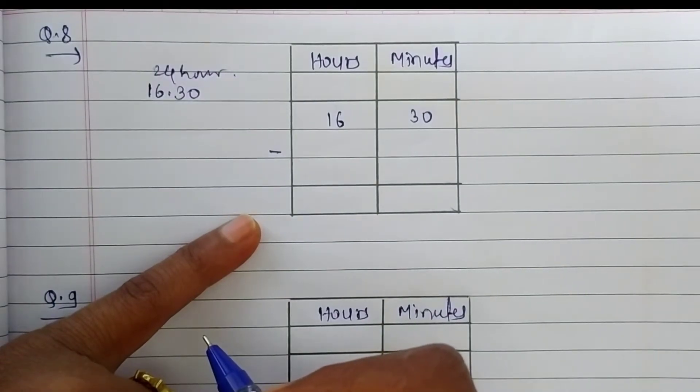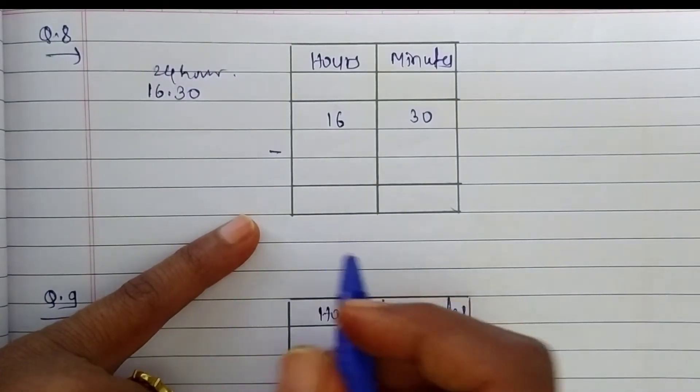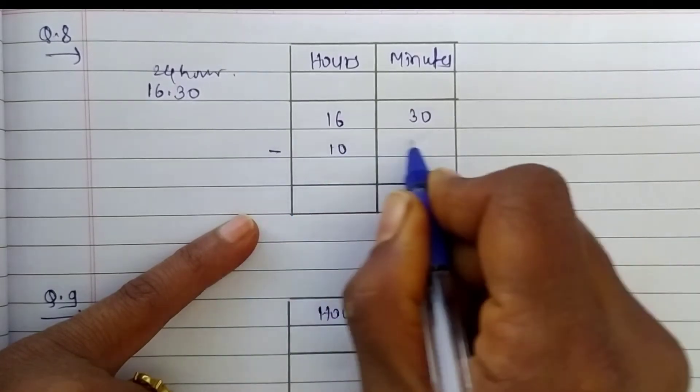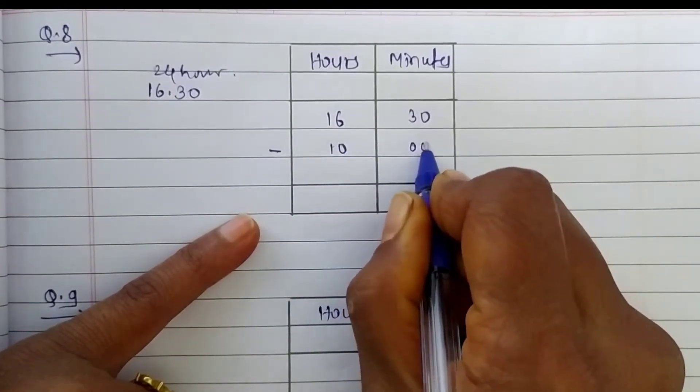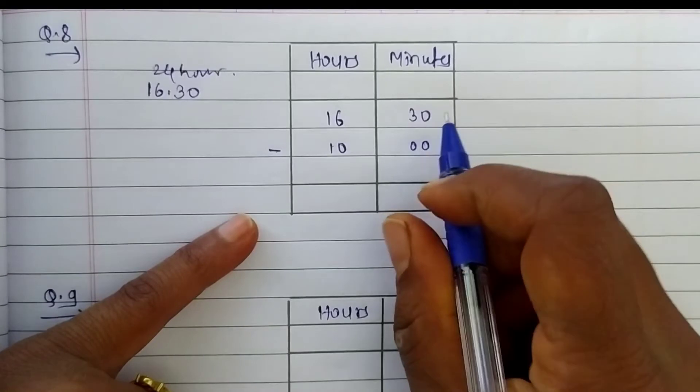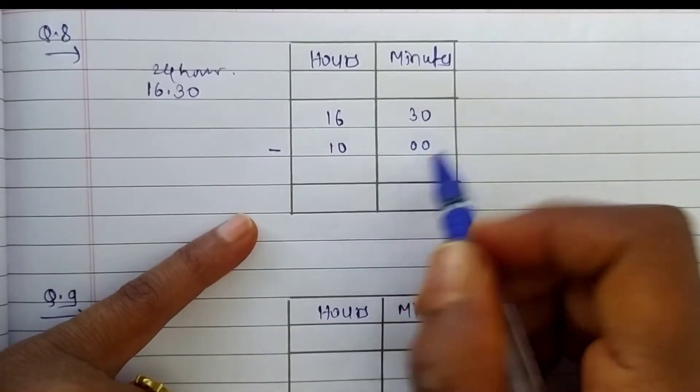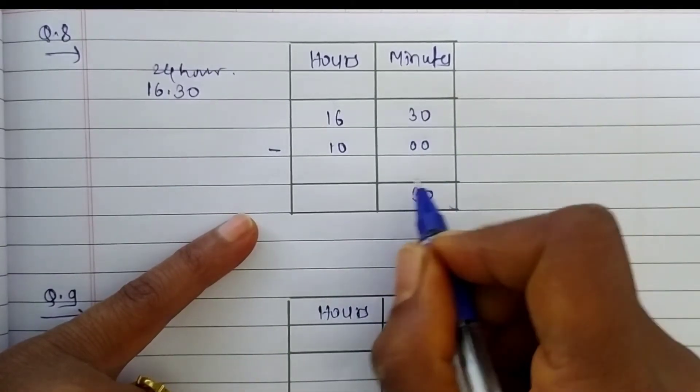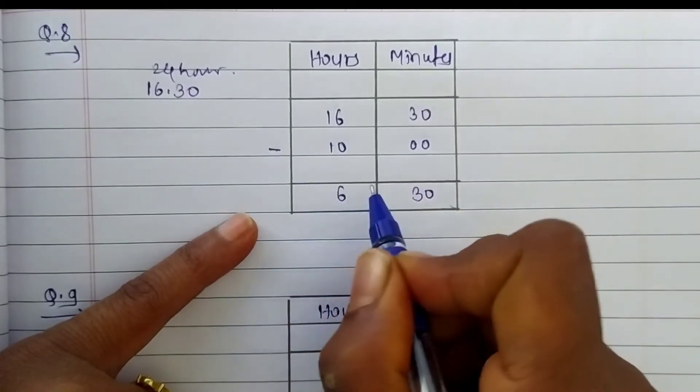So let's write here 16 hours and 30 minutes minus. From 10 in the morning, bank opens. So write here 10 hours and 0 minutes. Now let's subtract 30 minus 0, it's 30 and 16 minus 10, it's 6.